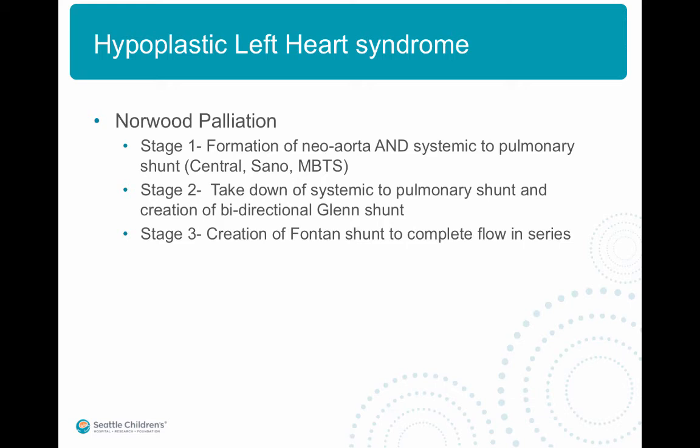A few months later, when the pulmonary vascular resistance drops, the systemic to pulmonary shunt is taken down and a bidirectional Glenn shunt is formed. Stage three, which is the Fontan completion, is where the IVC blood is directed into the pulmonary system to complete the flow in series.